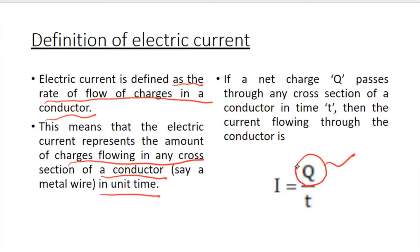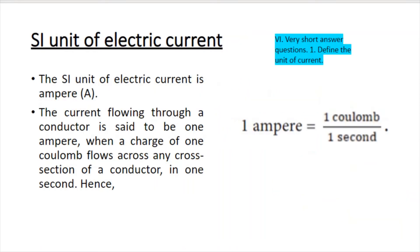Charge is denoted by Q in coulombs and time by T in seconds. If Q charges pass through any cross section of the conductor in time T, the current I is equal to Q divided by T. This is the definition and formula of electric current.